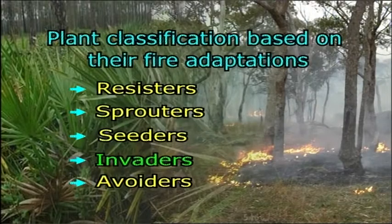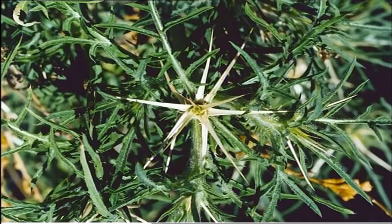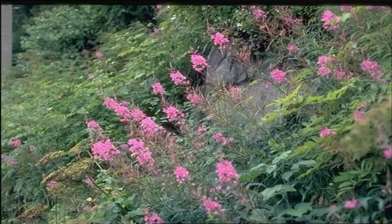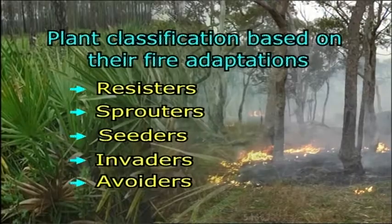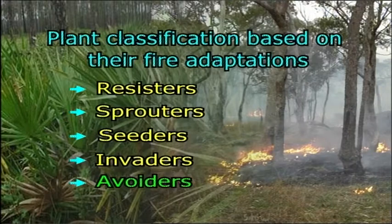Invaders take over recently burned areas, and many of them are noxious weeds. Examples include star thistle and fireweed. Avoiders are least adapted to fire, not found in recently burned areas, and are typically found near water or in high elevations.